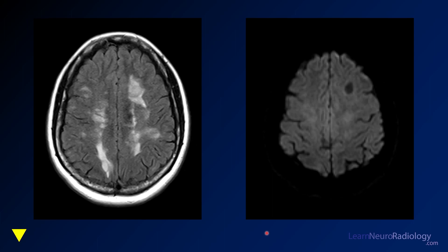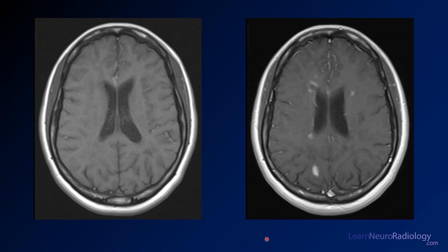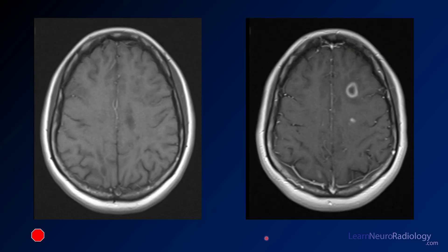By now you should have some thoughts about what this is. On pre- and post-contrast imaging, you do see some areas of enhancement — ring enhancement in some lesions. Coming a little bit higher, additional areas of enhancement are visible. On the pre-contrast images there's nothing, but on post-contrast you have either small areas of enhancement or areas of ring-like enhancement.